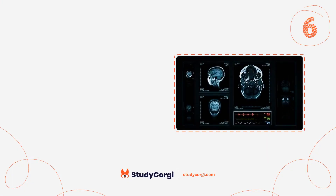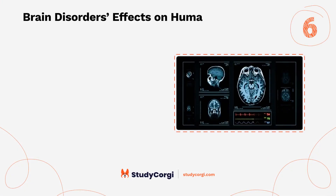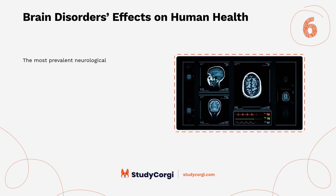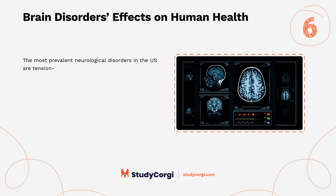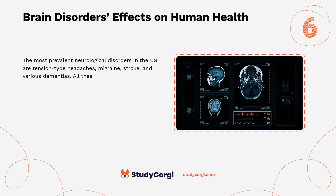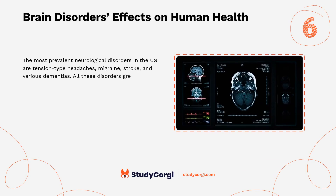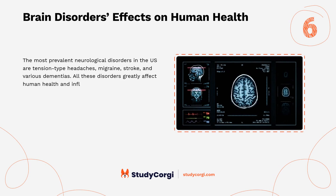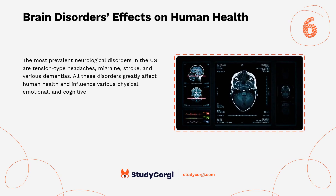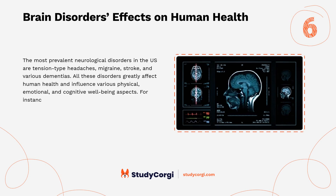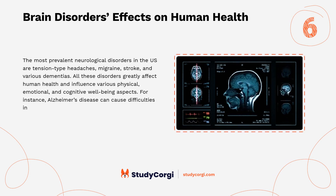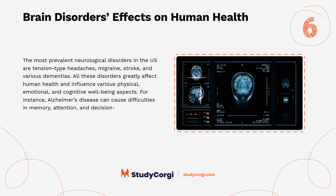Brain disorders' effects on human health. The most prevalent neurological disorders in the U.S. are tension-type headaches, migraine, stroke, and various dementias. All these disorders greatly affect human health and influence various physical, emotional, and cognitive well-being aspects. For instance, Alzheimer's disease can cause difficulties in memory, attention, and decision-making.